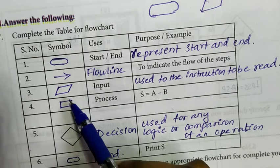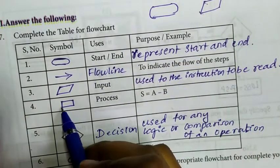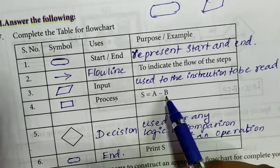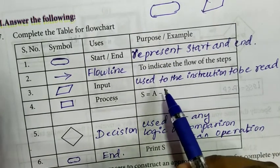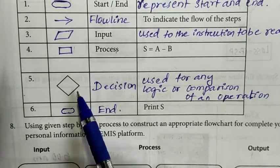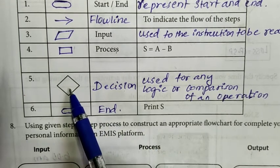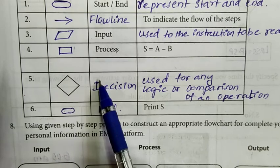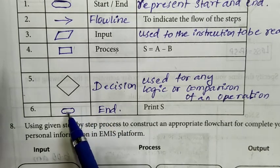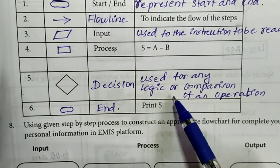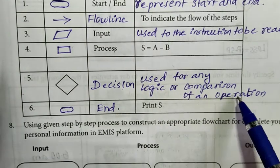Fourth, rectangle symbol, use as a process. Purpose is S equal to A minus B. Fifth, this symbol is decision symbol. Use it for any logic or comparison of an operation.